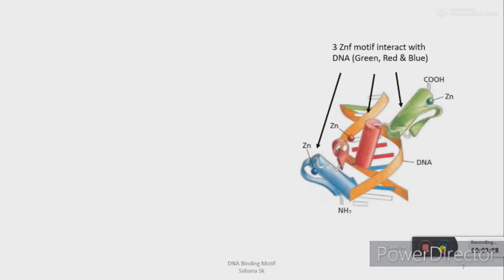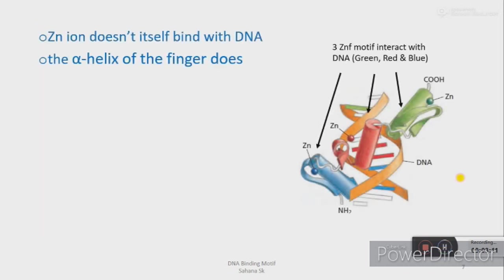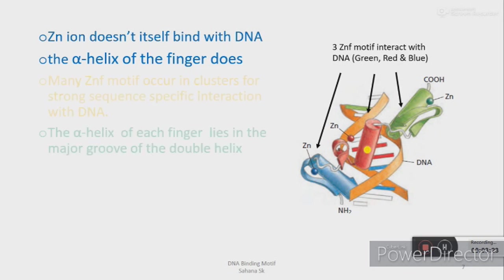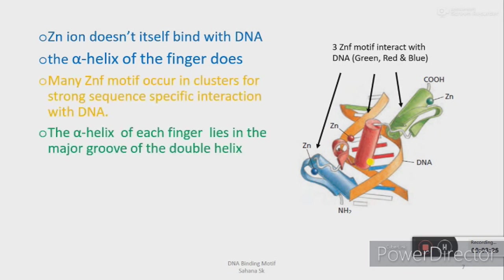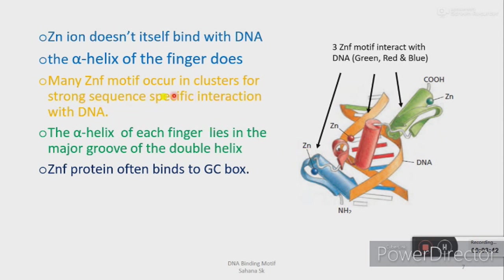The zinc ion only stabilizes the folding of the protein and does not itself bind to the DNA — so who does? The alpha helix binds to the DNA. The alpha helix of each finger lies in the major groove of the DNA double helix, and sometimes it binds to the GC box. A single zinc finger motif's interaction with DNA is not strong enough, so the protein has a cluster of them for stronger and more specific interaction. In this figure you can see three zinc finger motifs which together interact with the DNA.